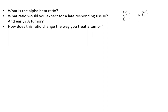For late responding tissue — LR — that includes organs like neurons, and the alpha-beta ratio is going to be around 3. For early responding tissue, something like skin, it doesn't take much dose to cause a reaction such as erythema or epilation.